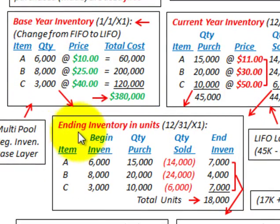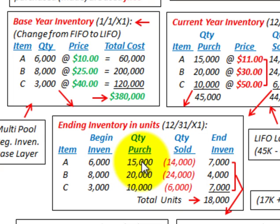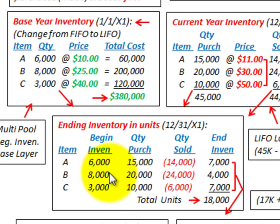The first thing we have to do is determine our ending inventory in units at 12/31/X1, looking at each item separately. For item A, we take the beginning inventory of 6,000 plus the quantity purchased of 15,000 less the quantity sold of 14,000, giving us an ending inventory of 7,000 units. You do the same for items B and C — beginning inventory plus quantity purchased, subtract quantity sold, to get ending inventory.